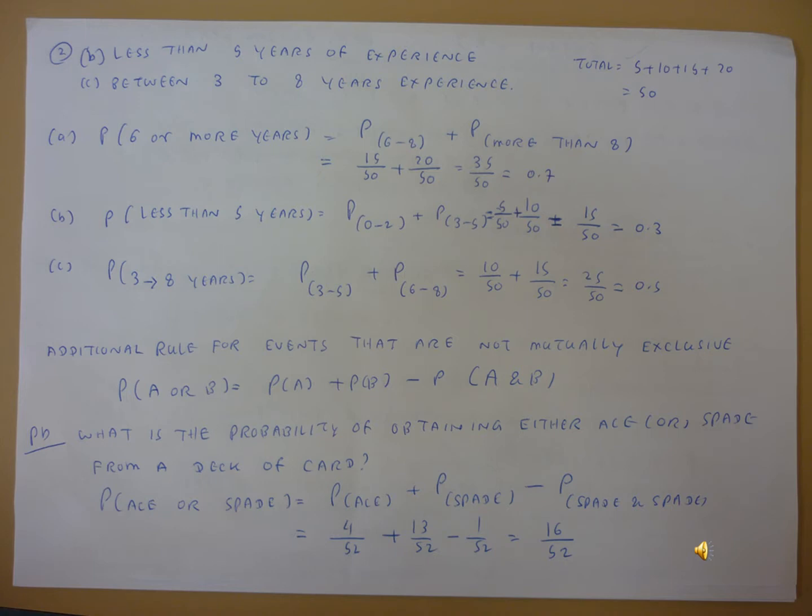And 6 to 8 years experience wearers is 15, total number is 50, so 15 by 50. That will be P(6 to 8). So we combine these.